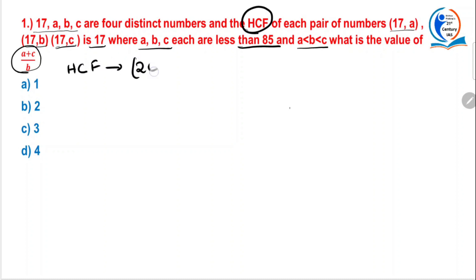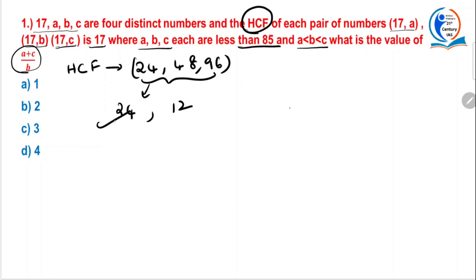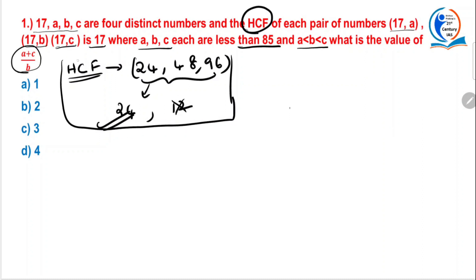For example, if the numbers 24, 48, and 96 are given, here the highest common factor of these numbers is 24. It is not 12. 12 is a factor but it is not the highest common factor. So this you have to be very, very clear.